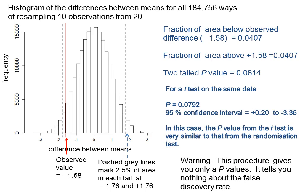But I must end with another warning. All this procedure gives you is a p-value. The p-value does not tell you what the probability of being wrong is. The probability that you are wrong when you claim to have made a discovery, because the p-value is small, tells you nothing at all about the false discovery rate.